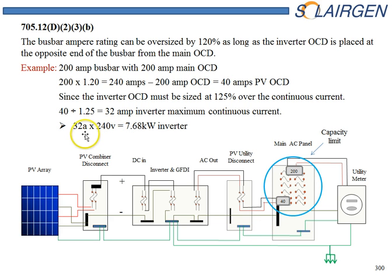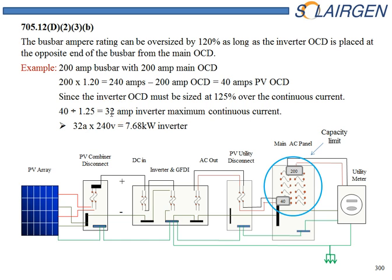When we determine how large of an inverter we can connect, we take that overcurrent device and divide by 125% to find the ampacity of the inverter. The reason we do that is because we have to size the overcurrent device 125% greater than the continuous current. So we're basically backing in to find out what the capacity of the inverter could be. That's option one for load side connections.